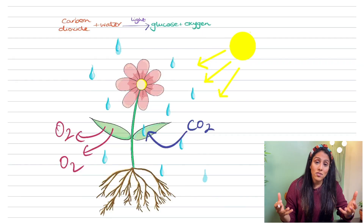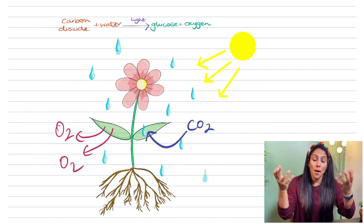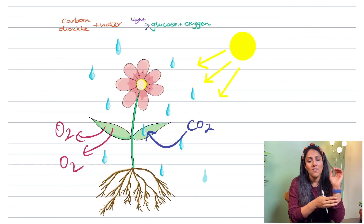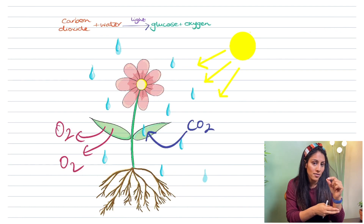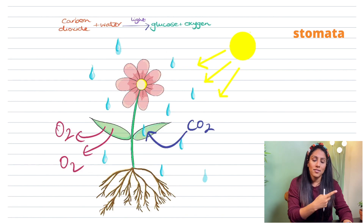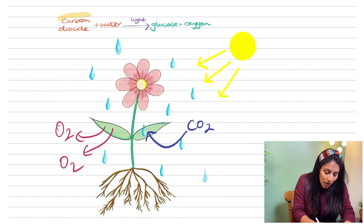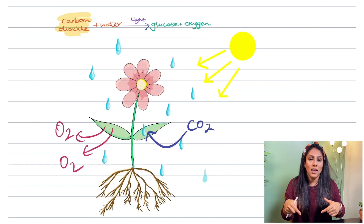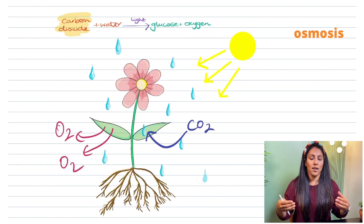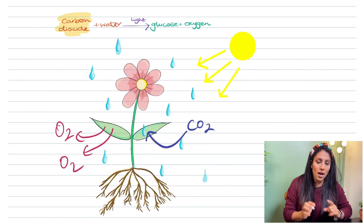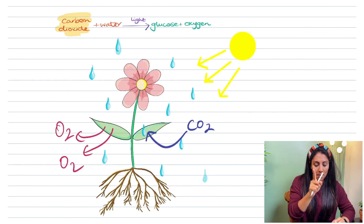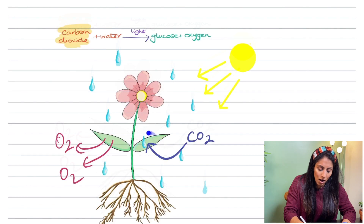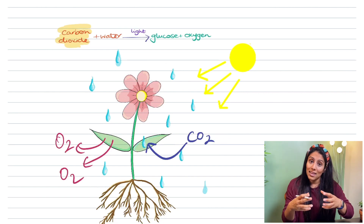So how does photosynthesis work? Carbon dioxide, which is abundant in the atmosphere, goes underneath into the leaf. The back of the leaf has these little holes called stomata — these little pores — and the carbon dioxide is able to get into the leaf. In the same way, water when it rains goes into the soil, and then via osmosis it travels through the roots, up the xylem in the stem, and then into the leaf as well. So you can see here you've got carbon dioxide and water now in the leaf.